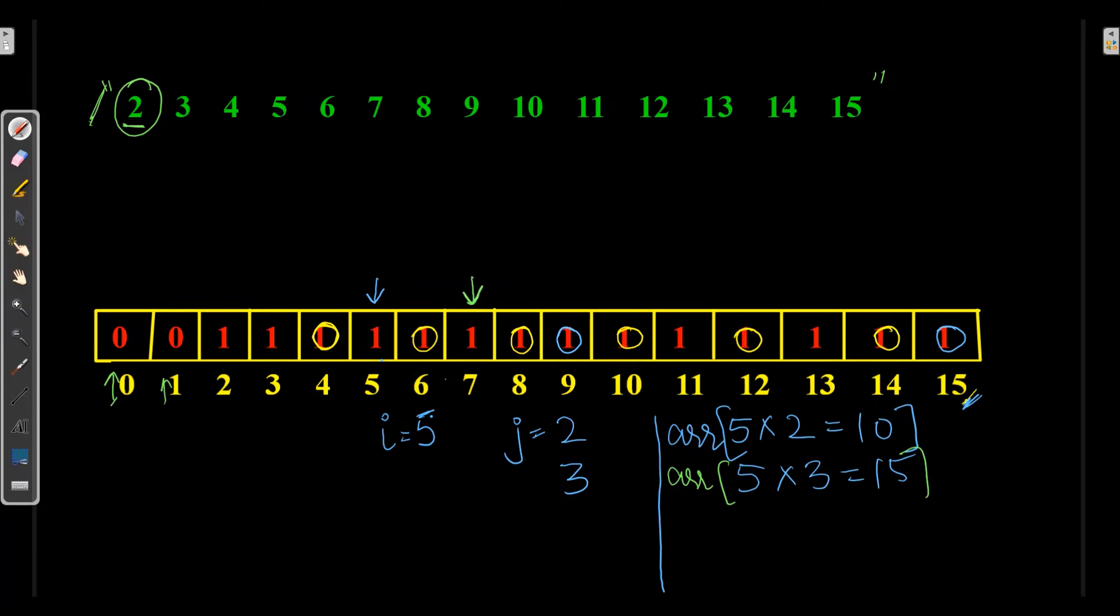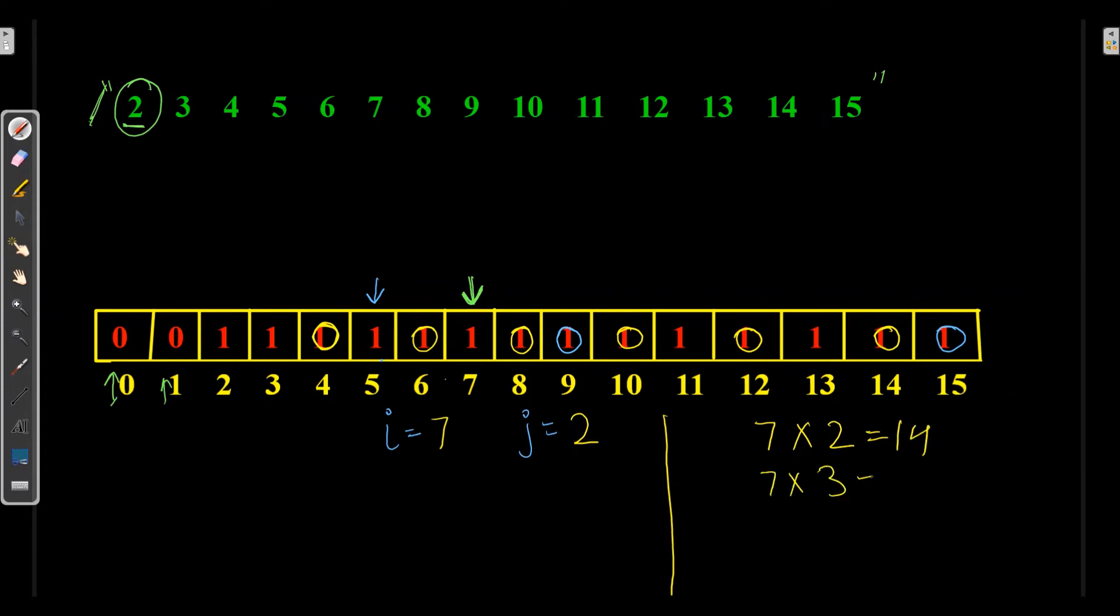After 5, 7 is a prime number. I equals 7. J starts with 2. 7 into 2 is 14. 7 into 3 is 21, and 21 is greater than 15, so we won't include it. Array of 14 as 0, which is already 0.